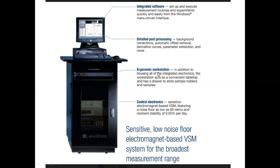Next are the parts of the VSM. Parts of the VSM include: water-cooled electromagnet, power supply, vibration exciter, sample holder, sensor coils, amplifier, lock-in amplifier, and meter.